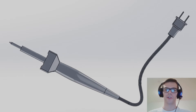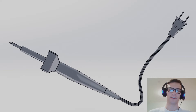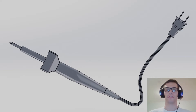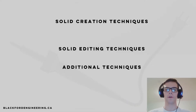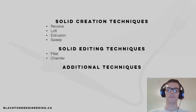Hello and welcome to the solid design tutorial on SolidWorks. We're going to be modeling this soldering iron and looking at a couple of key techniques. For solid creation, we'll look at revolves, lofts, extrusions, and sweeps, and for solid editing we can look at fillets and chamfers.